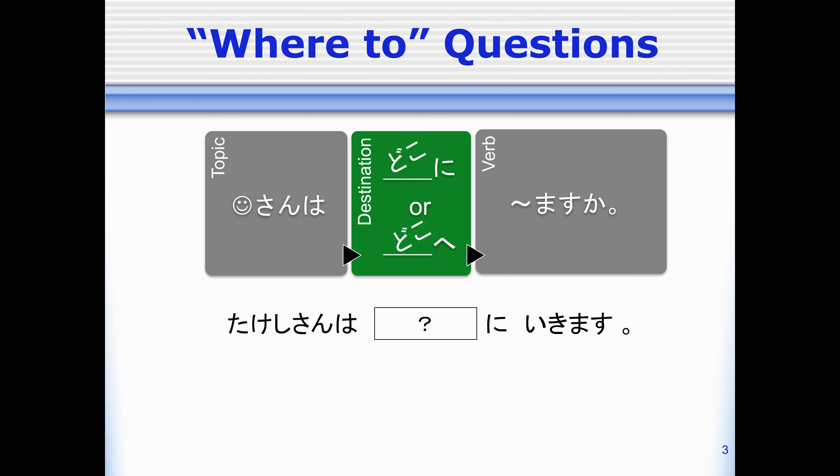That's right, I use doko. So when I want to ask where someone goes to, I can use the topic wa, doko ni ikimasu ka, or doko e ikimasu ka. So doko is my question word and the sentence needs to end with ka. Takeshi-san wa doko ni ikimasu ka? And I can answer by filling in the blank with toshokan. Takeshi-san wa toshokan ni ikimasu.